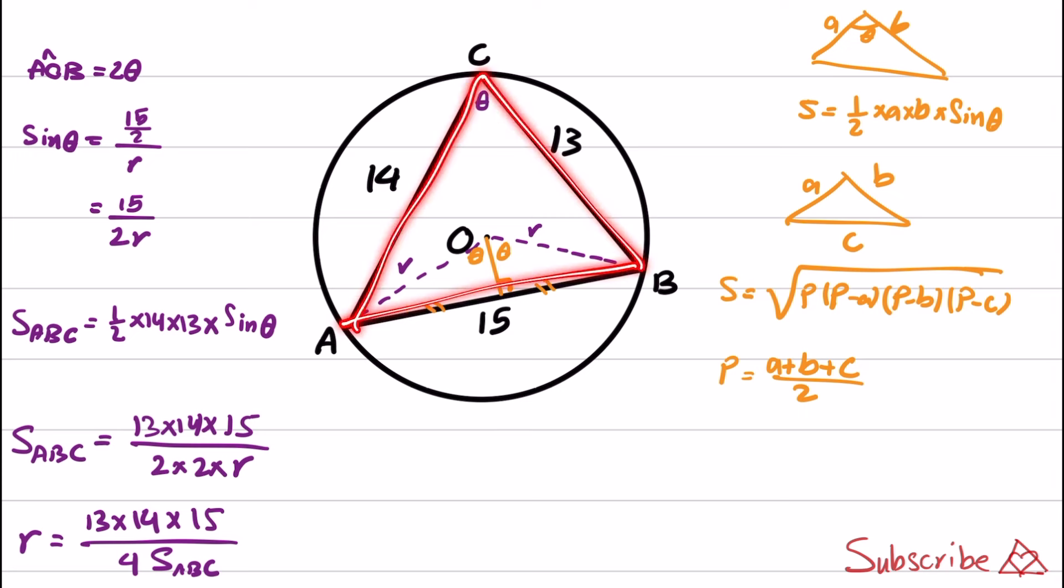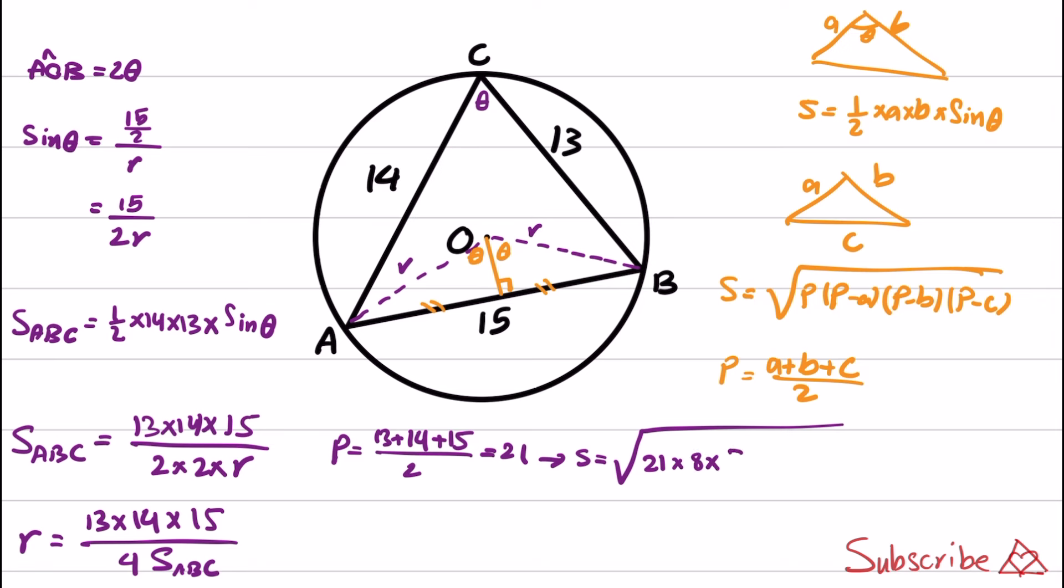Since all the sides are given, we can easily replace them here to obtain the value of S. P is obtained as 13 plus 14 plus 15 divided by 2, which equals 21. And from here, area is the square root of 21 times 8 times 7 times 6. And if you simplify this, you will have S equals 7 times 3 times 4.